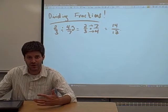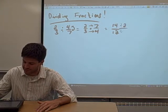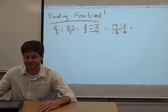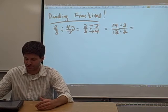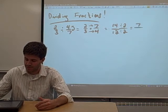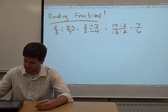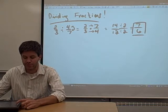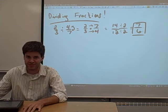And then of course, you have to reduce. Anytime you get a fraction that isn't in lowest terms, you want to reduce it. So in this case, 14 and 12 can both be divided evenly by 2, so you get 7/6. And your answer is 7/6. So 2/3 divided by 4/7 equals 7/6.